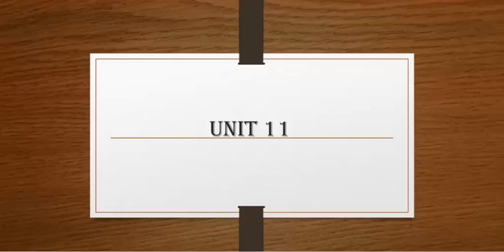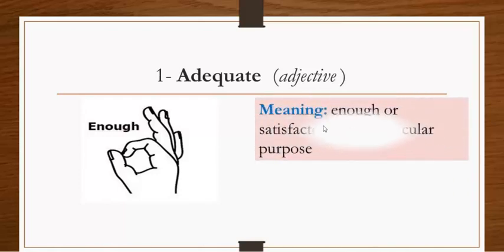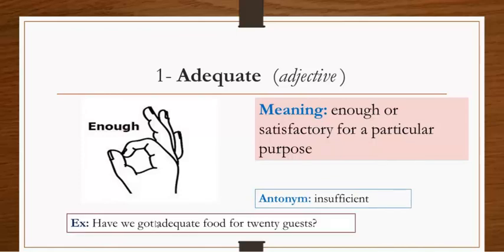The first word today means enough, and this sign means it's enough. The word is adequate. Adequate is mainly an adjective meaning enough or satisfactory for a particular purpose. The opposite of adequate is insufficient, not enough, not suitable. Example: Have we got adequate food for training us?